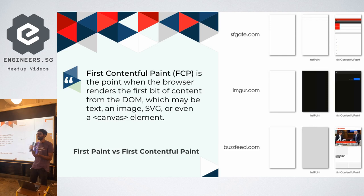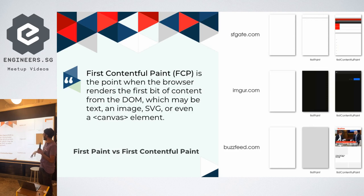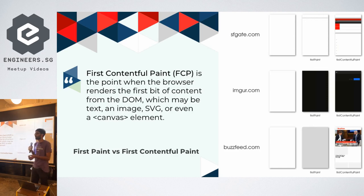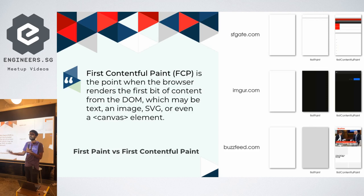First Paint is when anything is painted on the browser — it can just be a white flash as some websites are rendering. That's not very useful; knowing when your page background changes isn't meaningful. So a new standard called First Contentful Paint was defined to give a more meaningful metric: when something from the DOM is actually painted — the first text, first image, or first canvas element on screen. That tells you when the page has actually started loading, and it's the metric we'll be using throughout this talk.